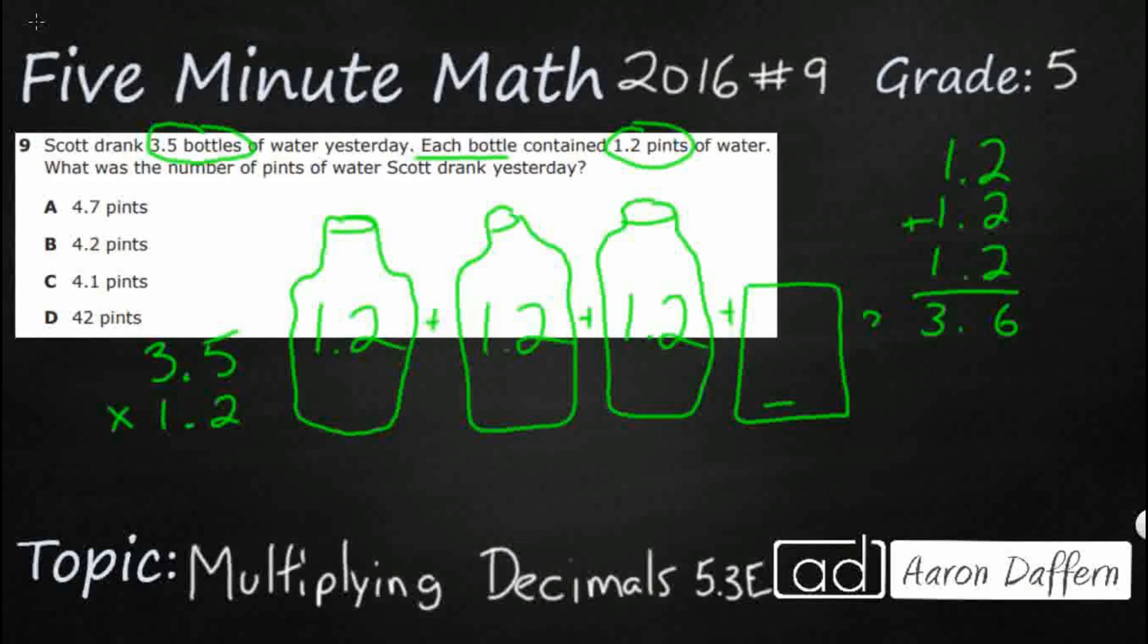Do we have to line up the decimals? Now in this case, the decimals lined up, but we don't have to multiply by lining up the decimals. You actually multiply decimals by ignoring them when you're doing your multiplication.